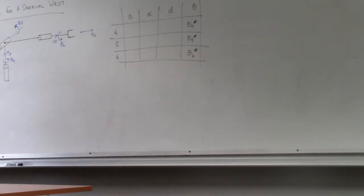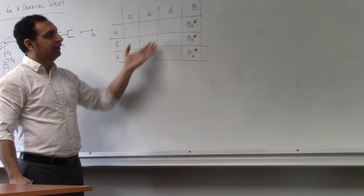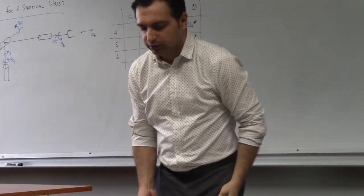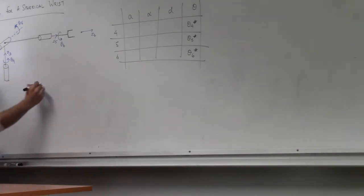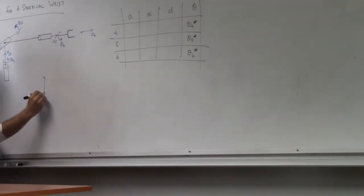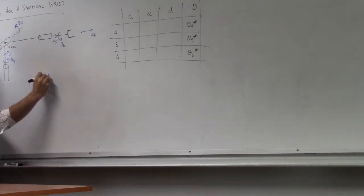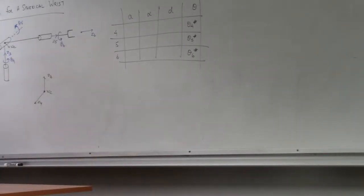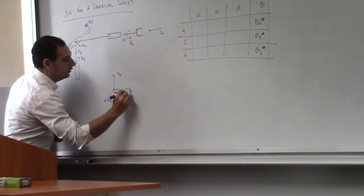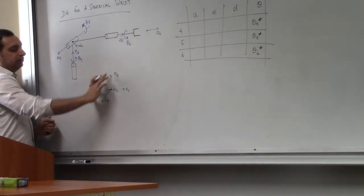The only thing we need to figure out here is: for most cases A is zero, because the link lengths are zero. The main thing of interest is alpha. D is only relevant in one case, because the lengths are essentially zero — the lengths are taken care of by the first three joints. So if you look at this space, z3 is like this. Let's take the wrist center WC. Z4 is outside the board. So now I have a choice to pick x4, either like this or like this — perpendicular to both z3 and z4.